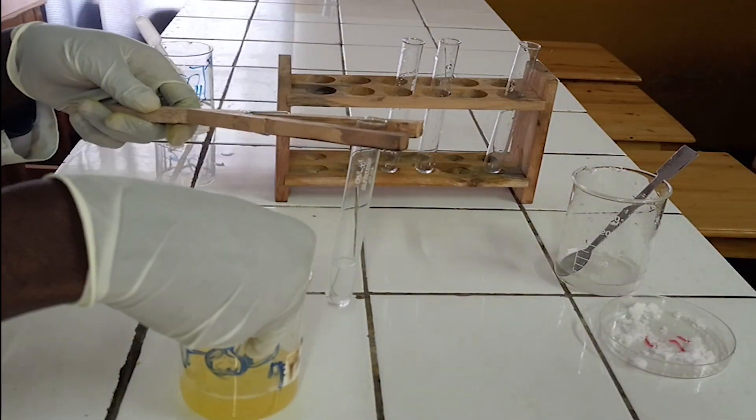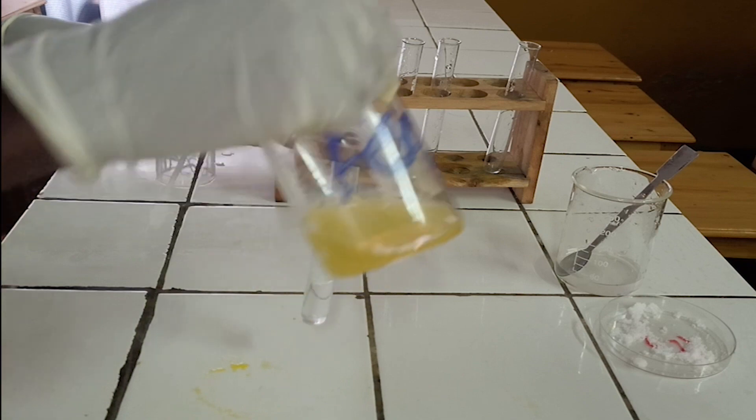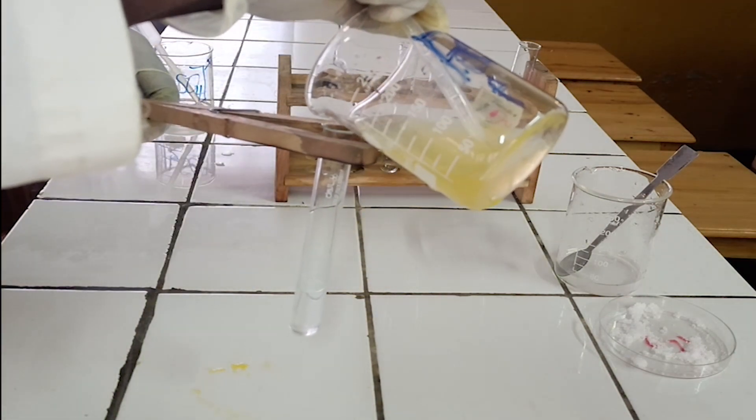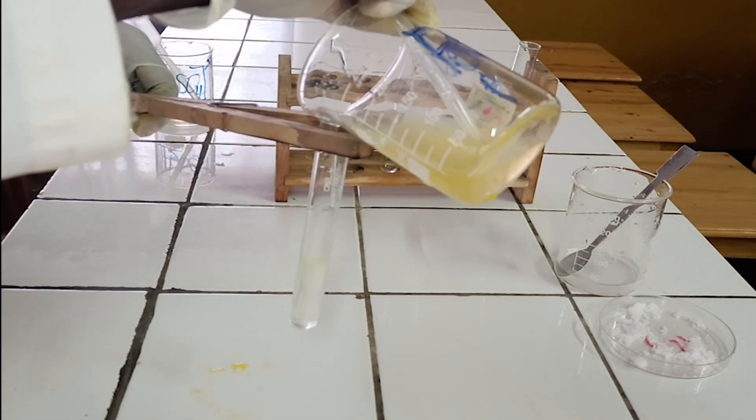To the test tube that contains analyte solution, add around 4 milliliters of iron-2-sulfate solution freshly prepared.